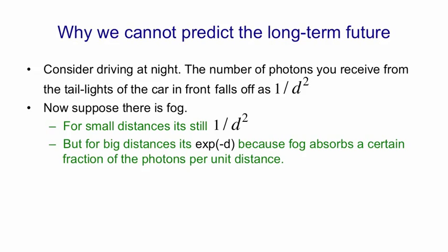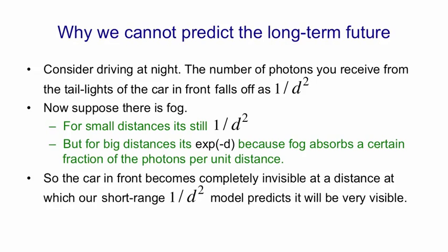So for small distances, fog looks very transparent. But for large distances, it looks very opaque. So the car in front of us becomes completely invisible at a distance at which our short range model, the 1 over d squared model, predicts it will be very visible. That causes people to drive into the back of cars in fog. It kills people.